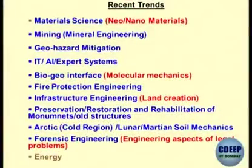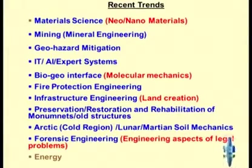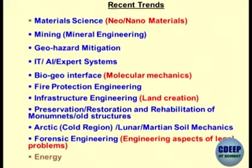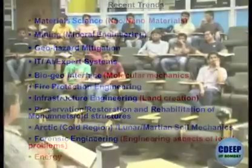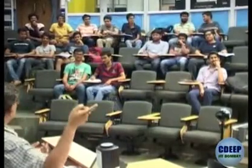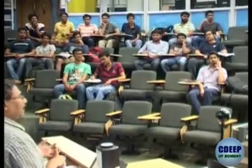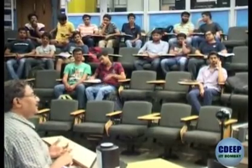Another interesting subject evolving nowadays is geohazards — this is a new phase of civil engineering. What do you mean by geohazards? Earthquakes, landslides, avalanche, cyclones, sinkholes, hurricanes, tsunamis, tectonic motion causing earthquakes, floods — all of these. Flood is also a geohazard: from soil erosion to flattening of river beds and more. Geohazard is becoming a big subject in civil engineering, and geohazards are of two types: manmade and natural.